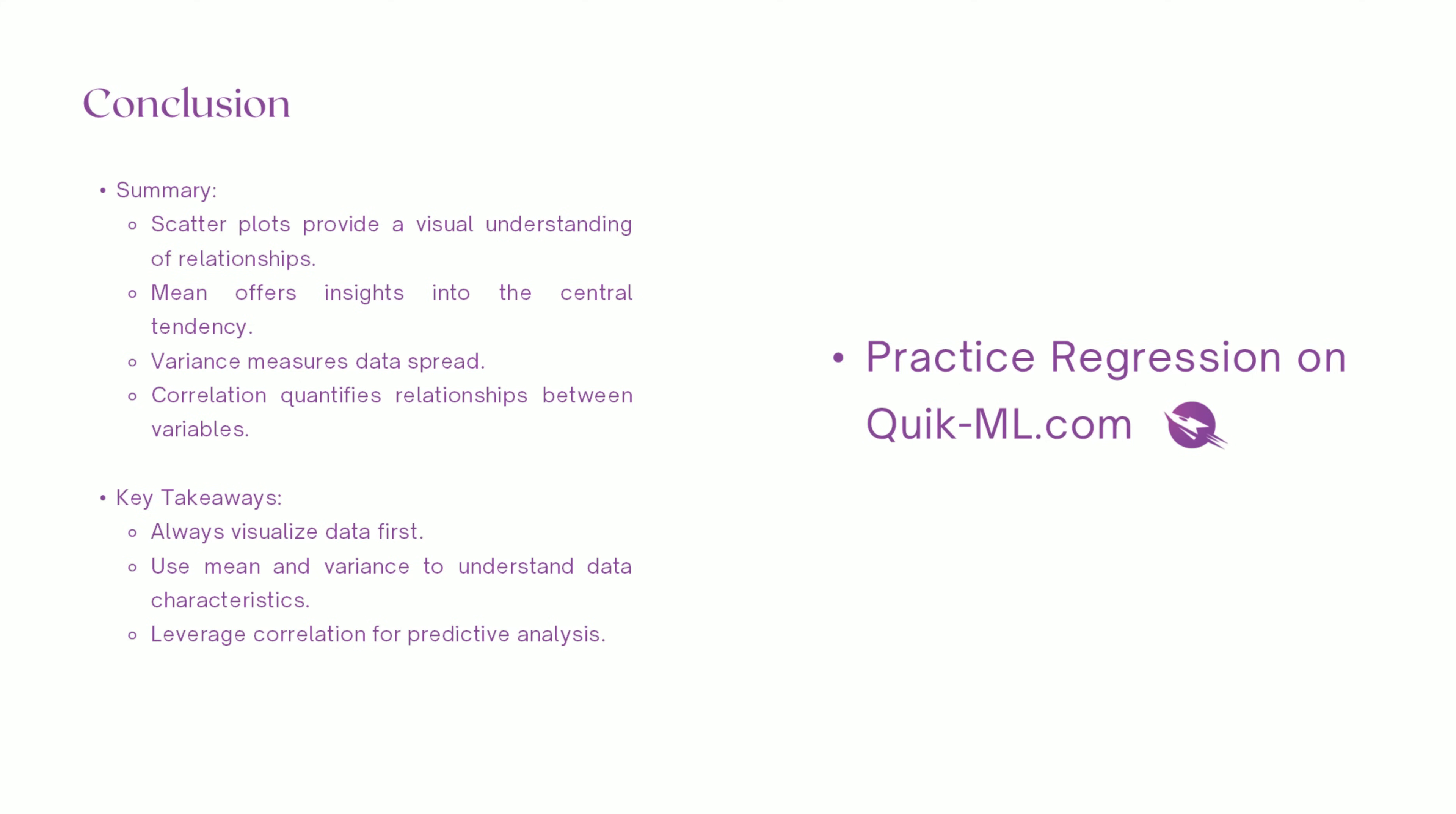Let's recap. Scatter plots give us a visual understanding of relationships. Mean helps summarize the data. Variance measures how spread out the data is. Correlation quantifies the strength and direction of relationships. Key takeaways: start with visualization - scatter plots are your best friend. Use the mean and variance to understand data characteristics. Leverage correlation for deeper insights and predictions.